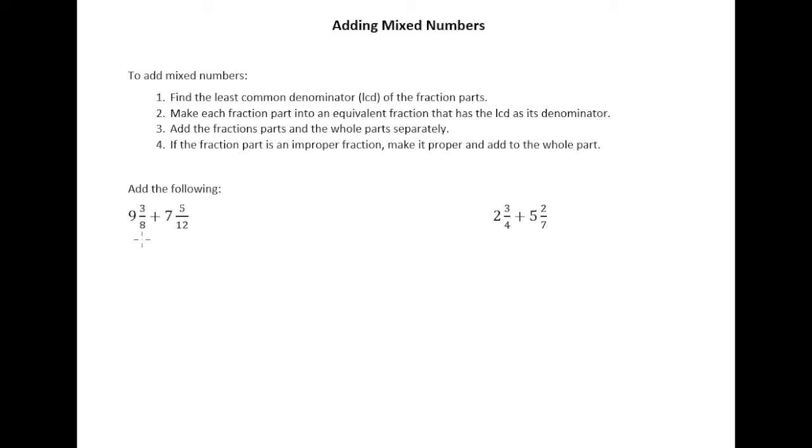So the nice thing about adding mixed numbers is you just add whole part plus whole part, fraction part plus fraction part. And so the first thing we need to do is find the least common denominator of 8 and 12. The least common denominator of 8 and 12, well that's going to be 24.